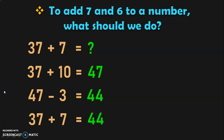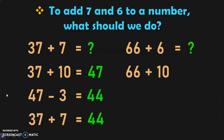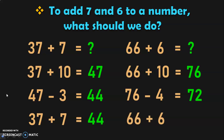Now let us do an example for adding 6 to a number. We know that 10 minus 4 is 6. 66 plus 6: first add 66 plus 10, which gives you 76. Now we have to subtract 4 from 76. 76 minus 4 gives you 72. So, the sum of 66 plus 6 is 72.